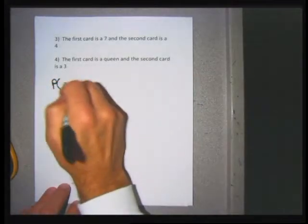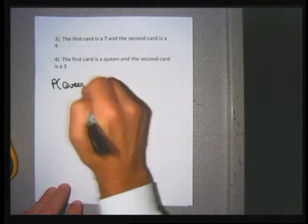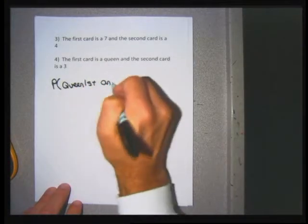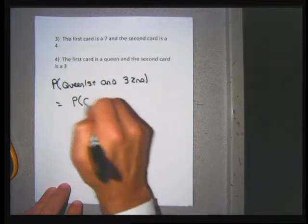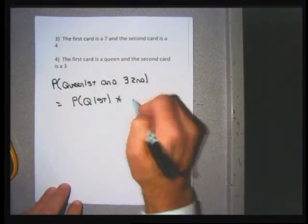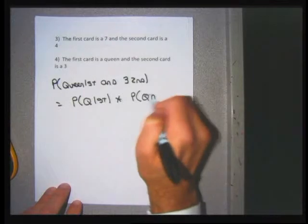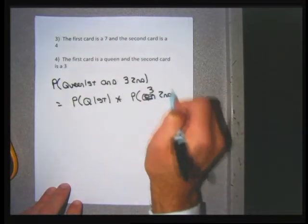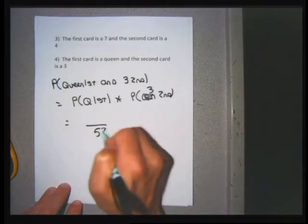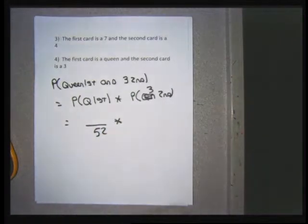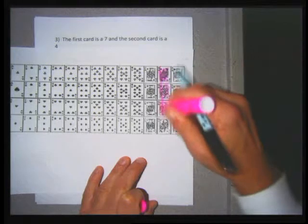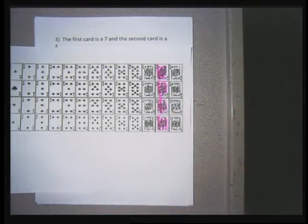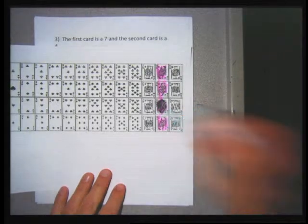For problem 4, I need the probability of getting a queen first and a three second. That equals the probability of getting a queen first times the probability of getting a three second. For the first probability, there are 4 queens in the 52-card deck, so the first probability is 4 over 52.